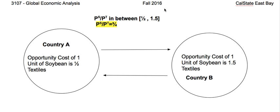If we switch and consider the situation of producers of soybeans in country B, the situation is very much the same. For each unit of soybeans they were producing, the producers in country B were making 1.5 units of textiles — and that was also their cost. Now, however, we are considering a situation in which producing one unit of soybean gives you only three quarters of a unit of textiles on international markets. The opportunity cost is unchanged: for each unit of soybean produced, I'm paying 1.5 textiles.